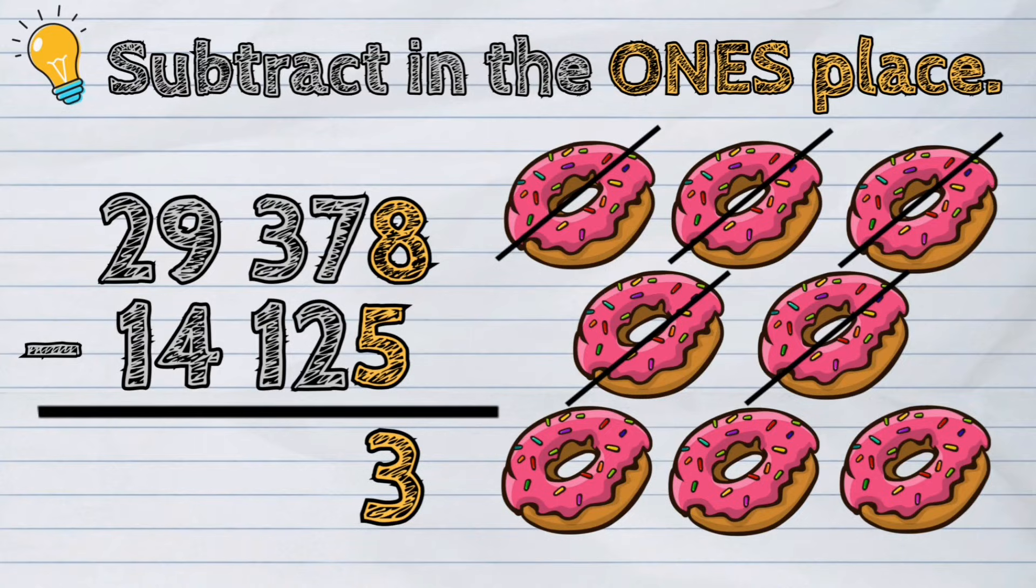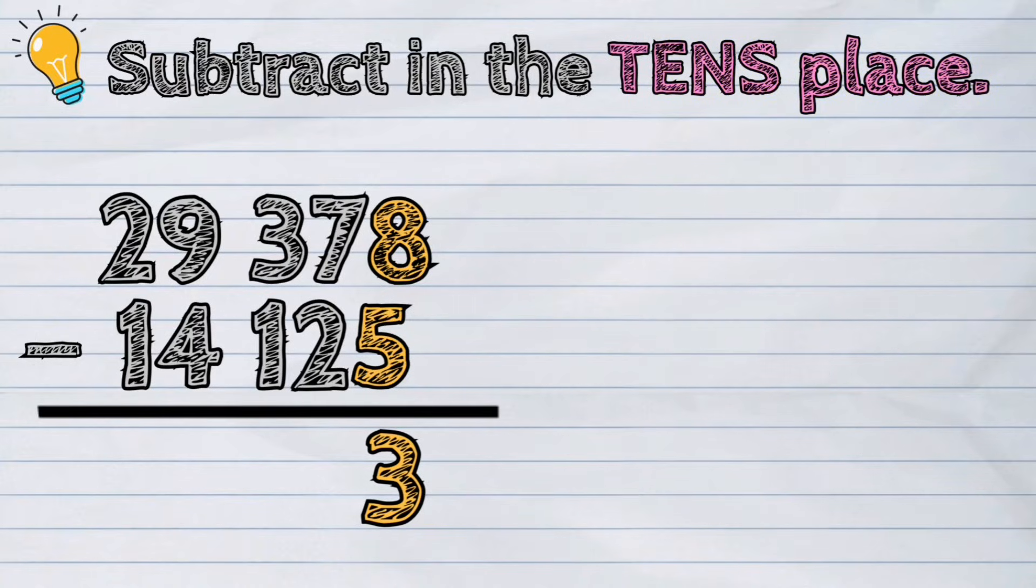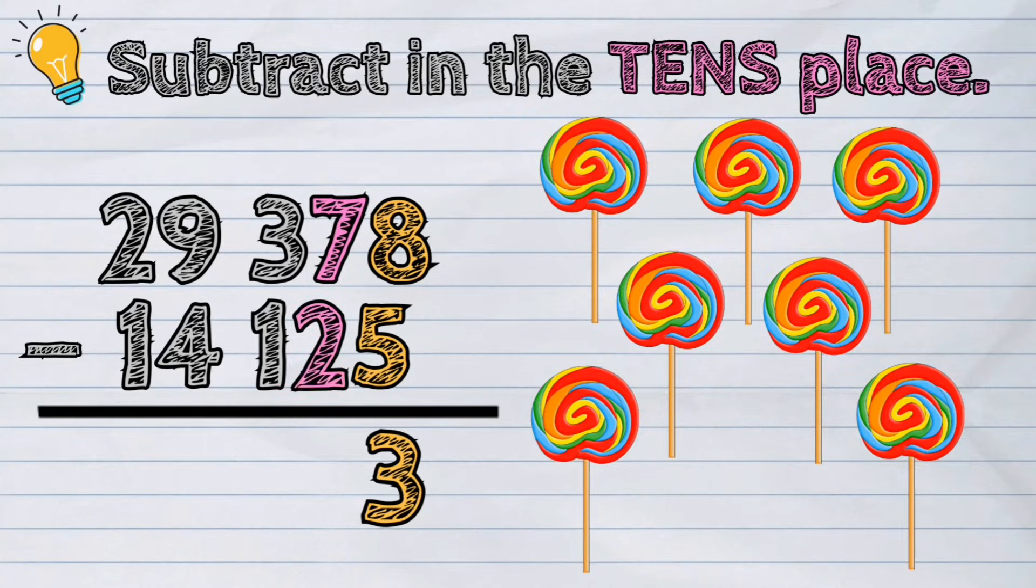Next, we will subtract the numbers in the tens place column. 7 minus 2 is equal to 5.